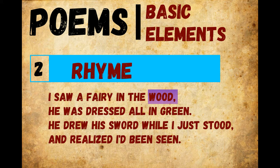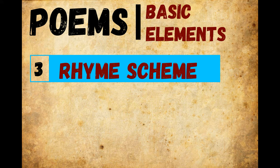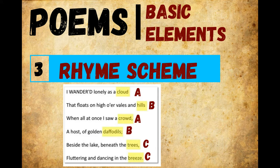I saw a fairy in the wood, he was dressed all in green. He drew his sword while I just stood, and realized I'd been seen. Rhyming scheme is the pattern of rhymes at the end of each line of a poem or song. It is usually referred to by using letters to indicate which lines rhyme. Lines designated with the same letter all rhyme with each other.